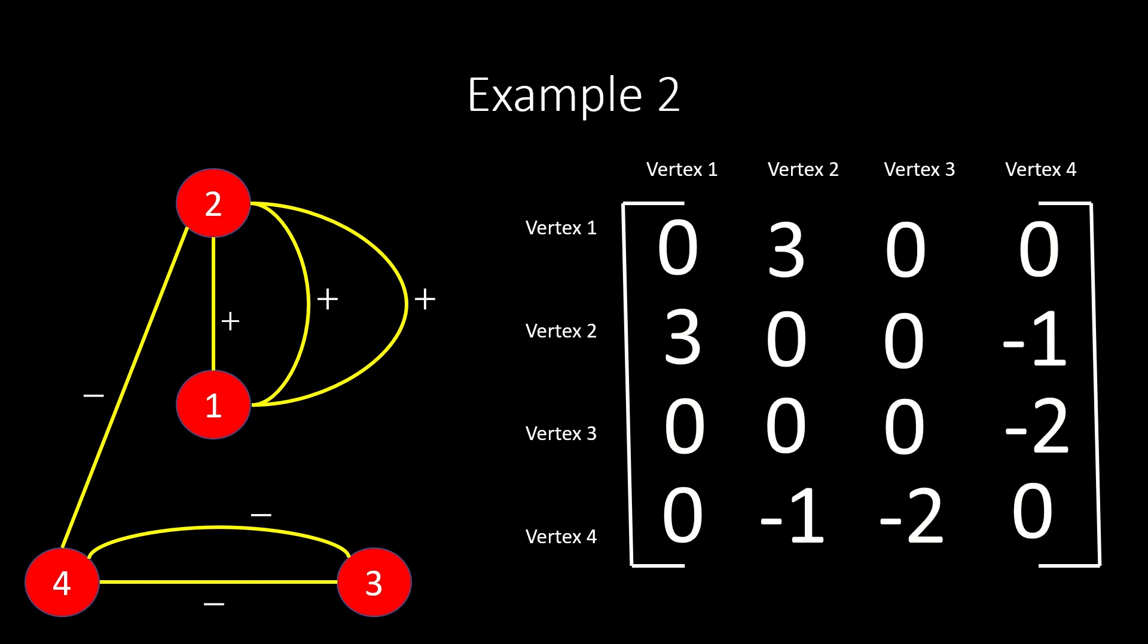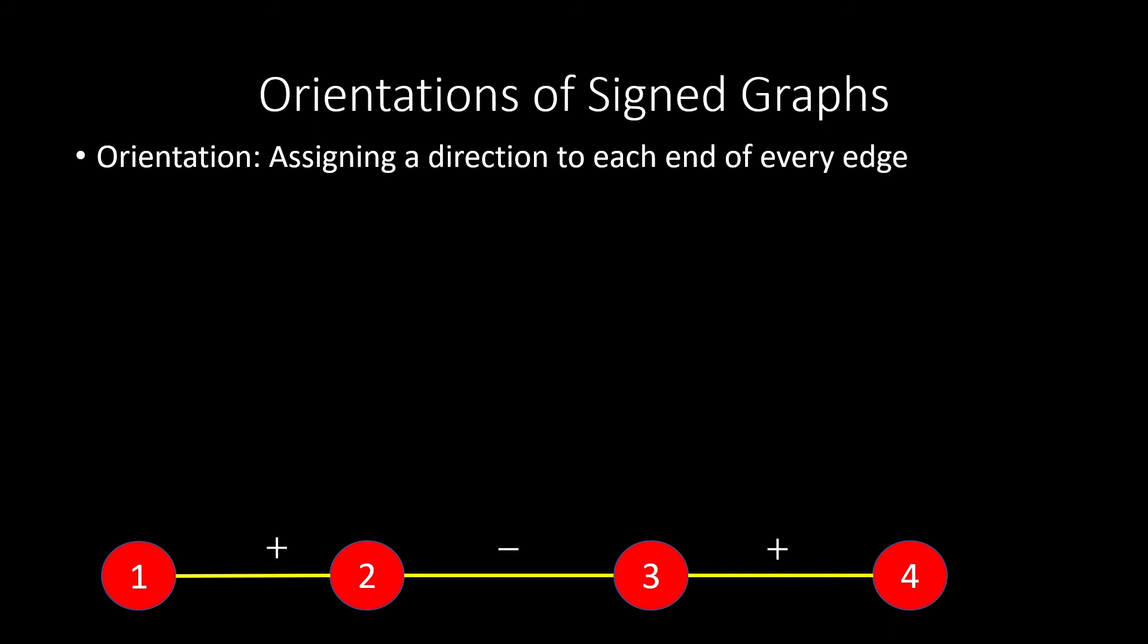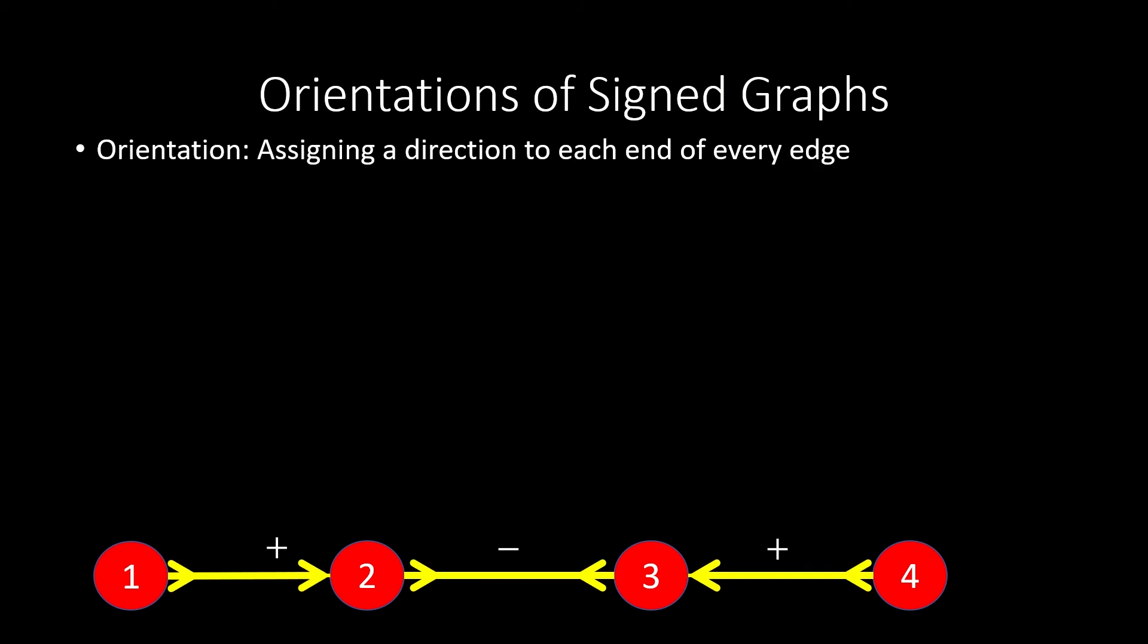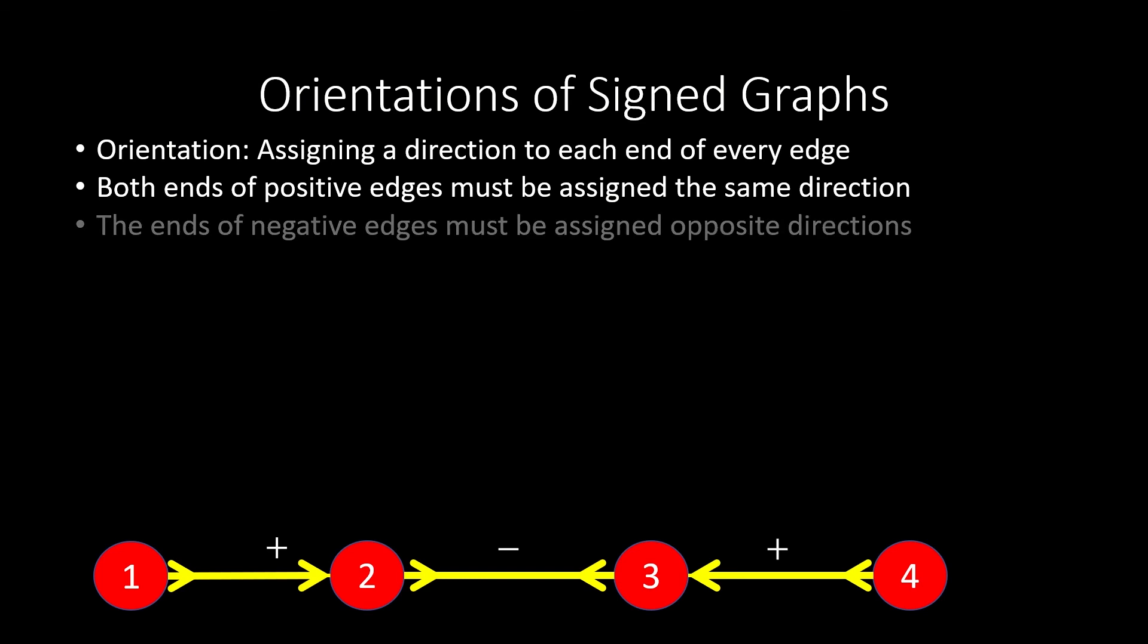Now, before we check out incidence matrices of signed graphs, we'll need to define orientations of signed graphs. Orienting a signed graph means to give a direction to each end of every edge in a graph. However, there are some rules that we have to follow when we orient signed graphs that are not in place when we orient an unsigned graph. If an edge is positive, the direction we assign to both ends of that edge must be the same. If an edge is negative, the direction we assign to both ends of that edge must be opposite.